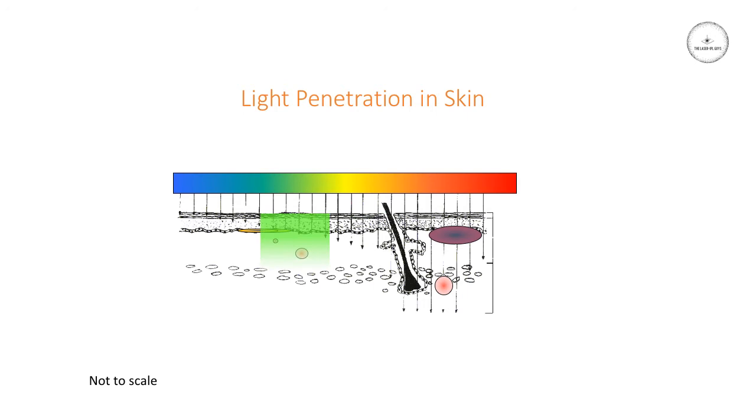Green light, which is around 500 to 550 nanometers, will penetrate somewhere between about 0.6 to 1 millimeters deep into the skin, so it can reach the papillary dermis. Only targets in that part of the upper dermis will be treated by green light.